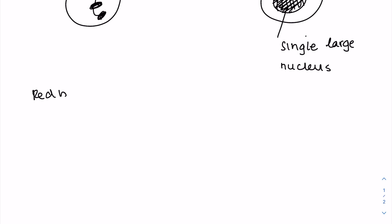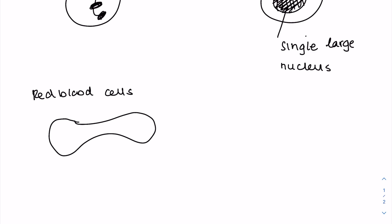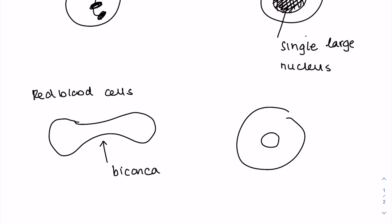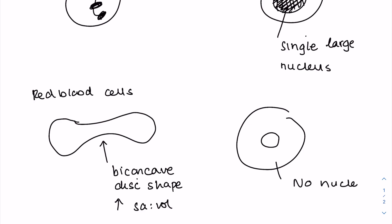Now red blood cells are adapted to transport as much oxygen as possible. If we look at a side view, they have what's known as a biconcave disc shape. Concave means it goes in, twice hence biconcave. Remember that's going to increase the surface area to volume ratio. You'll find no nucleus, and that's to provide more space for the pigment hemoglobin to bind to oxygen.